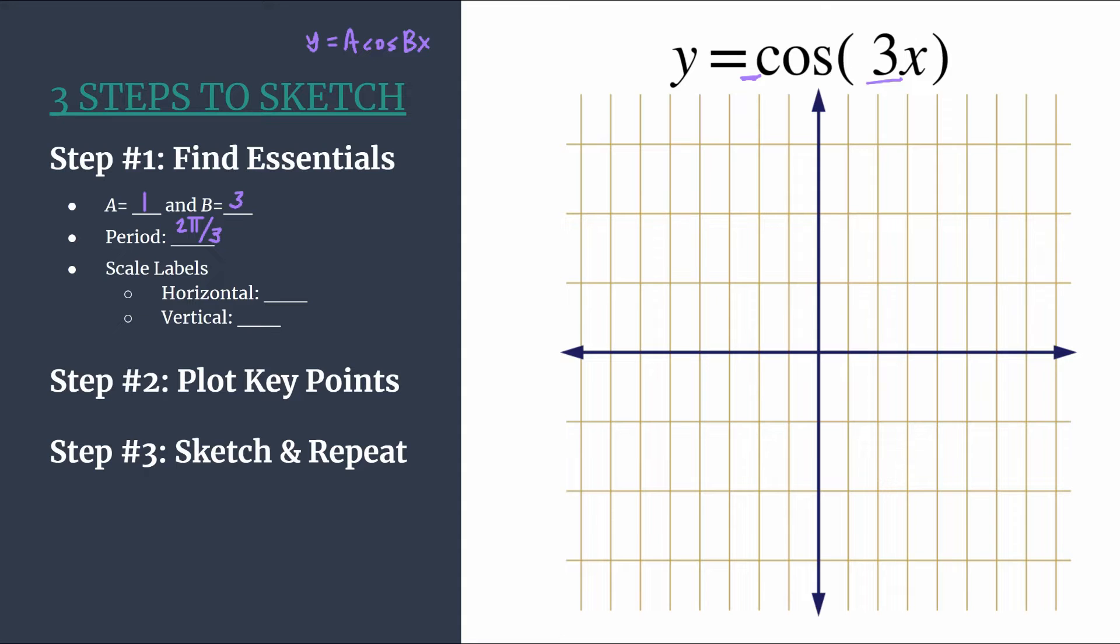The last thing we want to do in this setup step is decide on scale labels. I think the horizontal scale is the most important. With this method we always will take our period and divide by 4 and use that as our horizontal scale label. So we have 2π over 3 divided by 4 or multiply by 1/4, that's just a little bit easier to look at. You get 2π over 12 or π over 6.